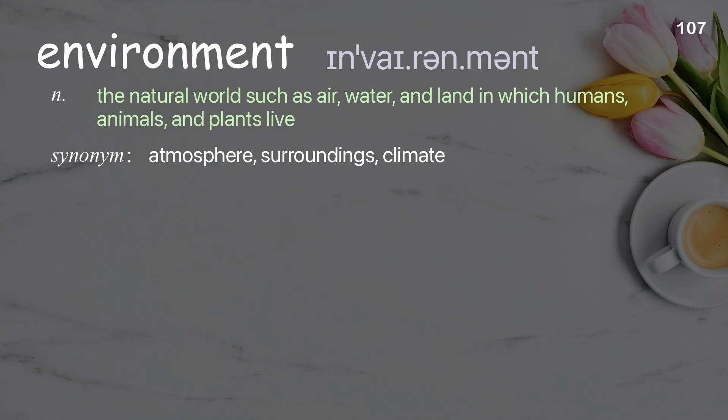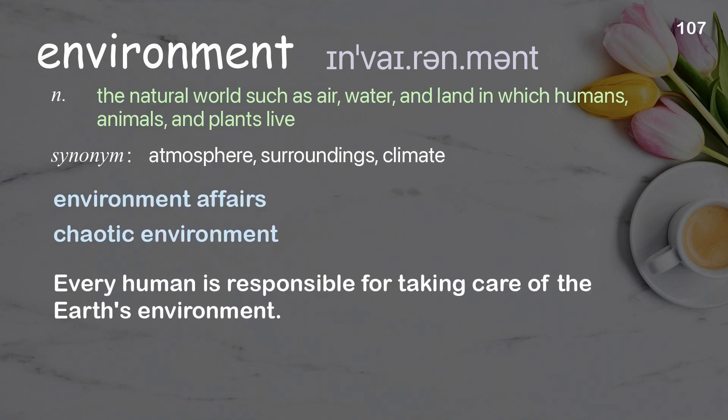Environment: the natural world such as air, water and land in which humans, animals and plants live. Examples: chaotic environment. Every human is responsible for taking care of the earth's environment.